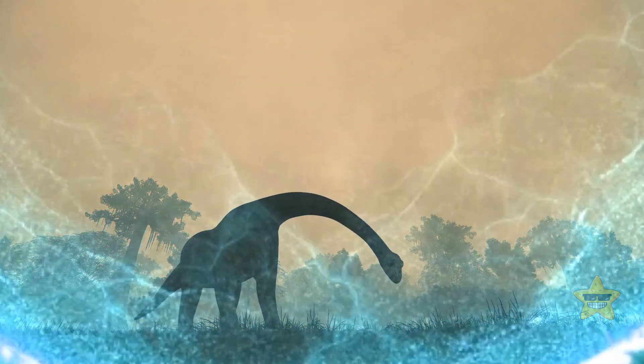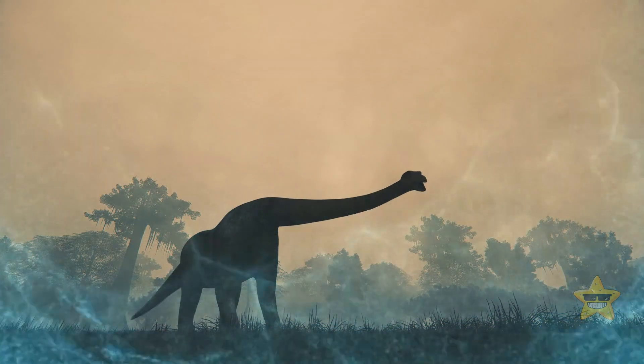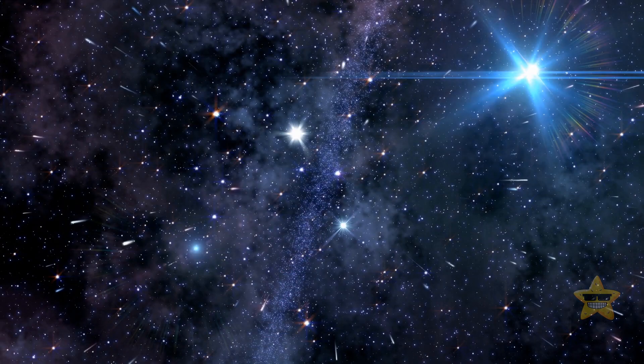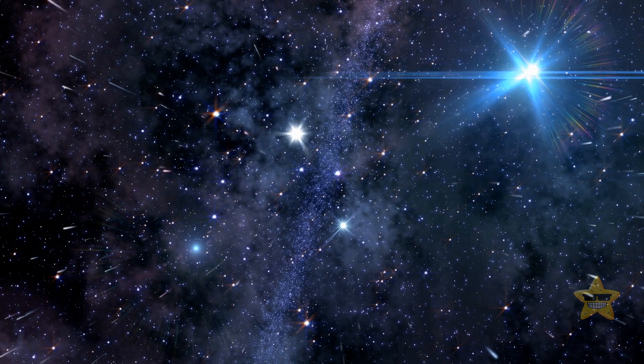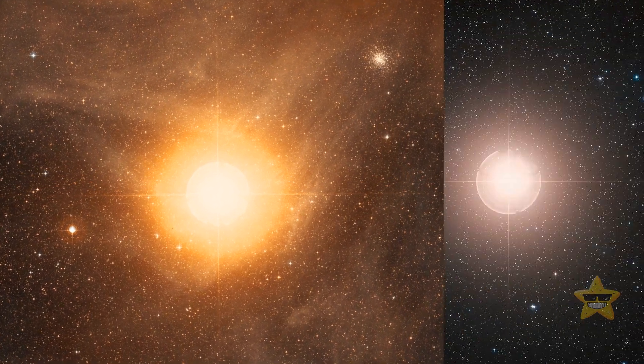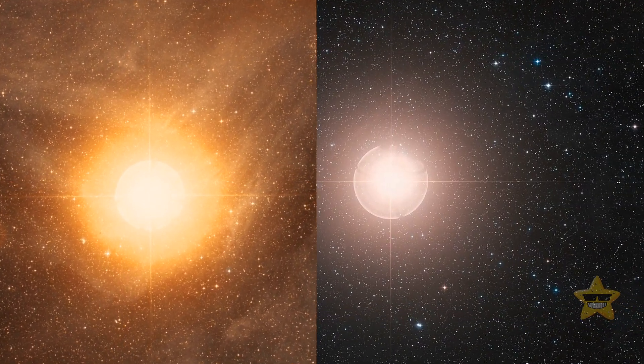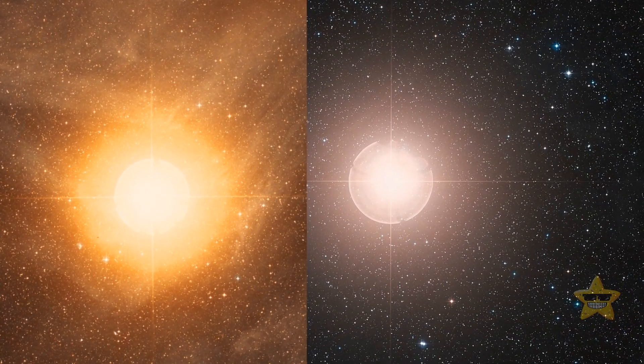The research also speculates that nearby supernova could have been responsible for at least one of the mass extinctions of complex life on Earth in the last 500 million years. But worry not, there are very few stars that might go supernova in the next million years or so. Two of them are called Antares and Betelgeuse, but both of them are more than 500 light-years away.